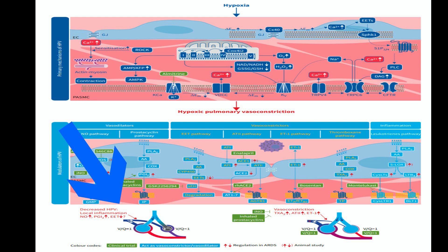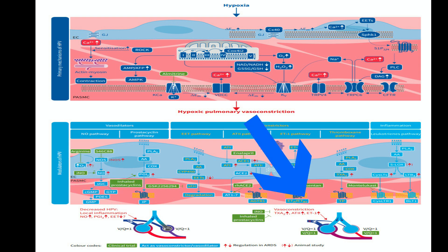On the contrary, an increase in vasoconstrictive substances such as ATII, ET1, and TXA2 in the pulmonary circulation can lead to vasoconstriction, promoting V/Q mismatch and pulmonary hypertension.